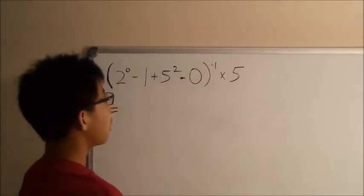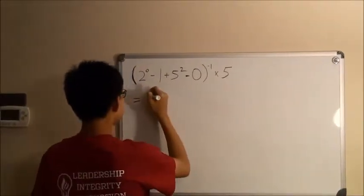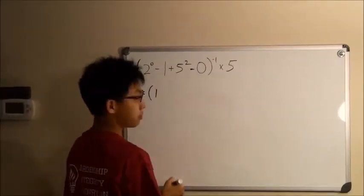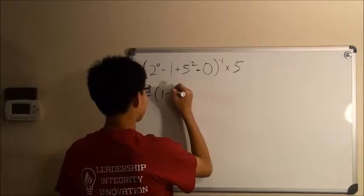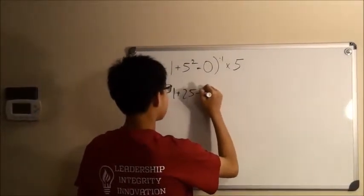To start off, we need to evaluate the number in the parentheses. So 2 to the power of 0 is 1, since anything to the power of 0 is 1, and then minus 1, plus 5 squared, which is equal to 25, and minus 0.